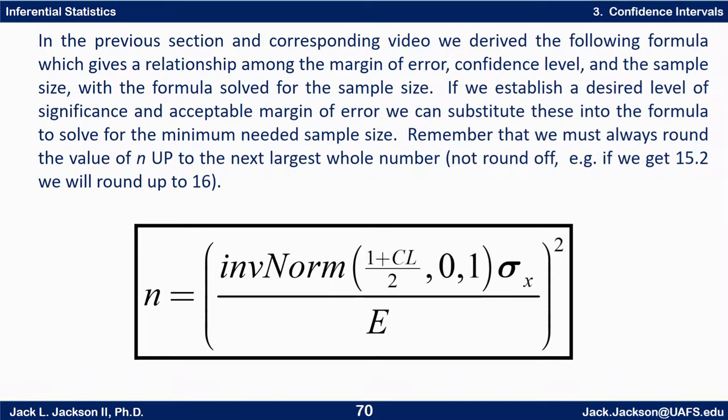In the previous section and corresponding video we derived the following formula which gives a relationship among the margin of error, confidence level, and sample size with the formula solved for the sample size. If we establish a desired level of significance and acceptable margin of error we can substitute these values into the formula to solve for the minimum needed sample size. Remember that we must always round the value of n up to the next largest whole number, not round off. For example, if we get 15.2 we will round up to 16.